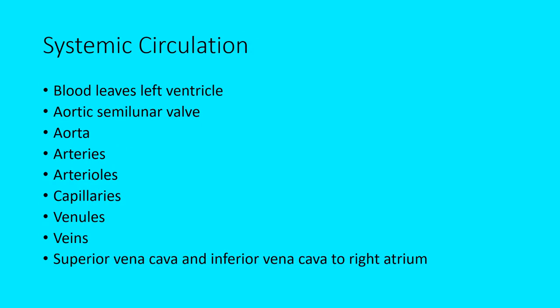The systemic circulation begins when blood leaves the left ventricle, passes through the aortic semilunar valve — between the left ventricle and the aorta — and enters the aorta. Think of it like a huge eight-lane interstate that immediately starts branching: loops here, exits to the right and left. That's how the blood vessels work — the main station is the heart, and as blood leaves, you have this whole branching of blood vessels.